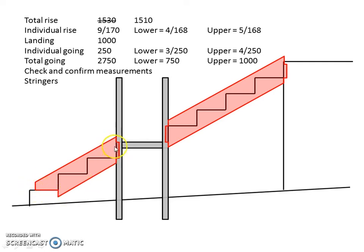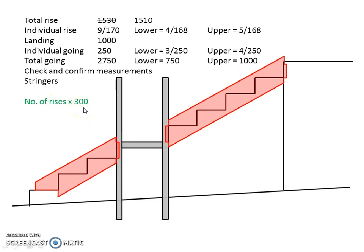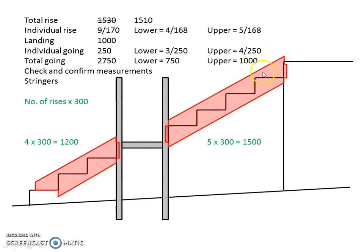The lower flight stringer looks very similar to the shape of steps in the first video — it sits on top of the bottom tread and is notched into the post. The upper set of stringers is a little bit different; it's notched at both ends. We can work out the length of them the same way as in the first video using the formula: number of rises times 300. For the lower flight, four rises times 300 gives a length of 1200. For the upper flight, five rises times 300 gives a length of 1500.